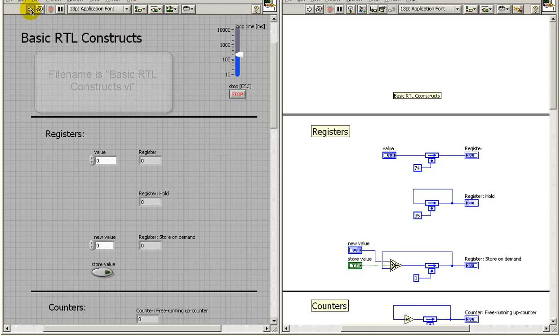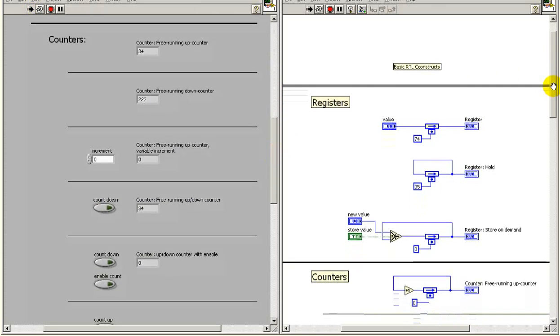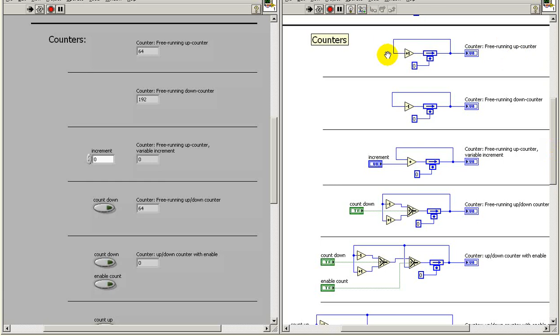Let's take a look at the VI called Basic RTL Constructs. And this implements all of these counters that we've discussed so far. All of these structures are contained inside a while loop, and that's why we see the values either increasing or decreasing right now. That's the free-running counters. Here I have one that's based on a variable increment. Increment is zero at the moment. That's why the counter appears not to be doing anything, although in fact, the register is sampling its inputs every clock cycle. So as soon as I give this a non-zero increment, we see that the counter starts operating just fine.